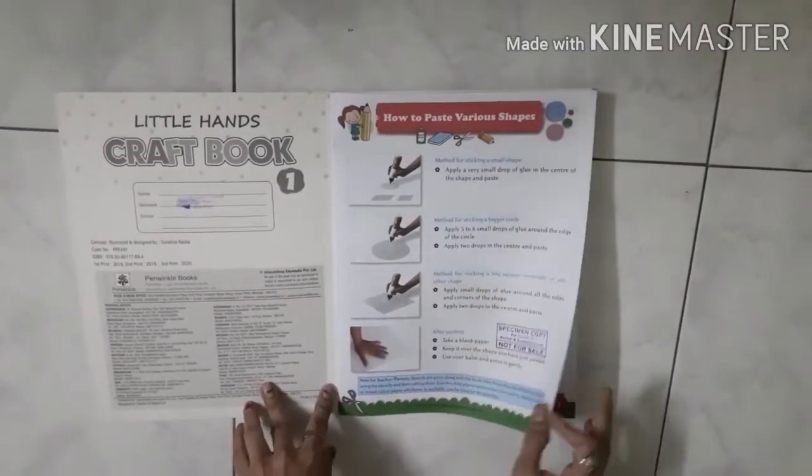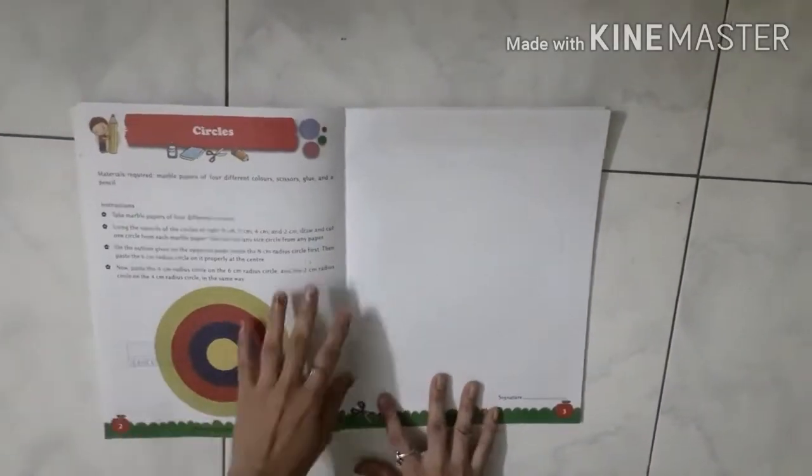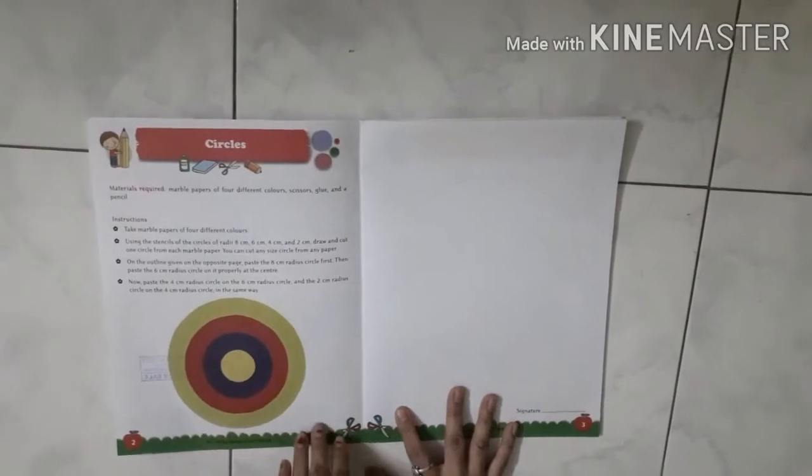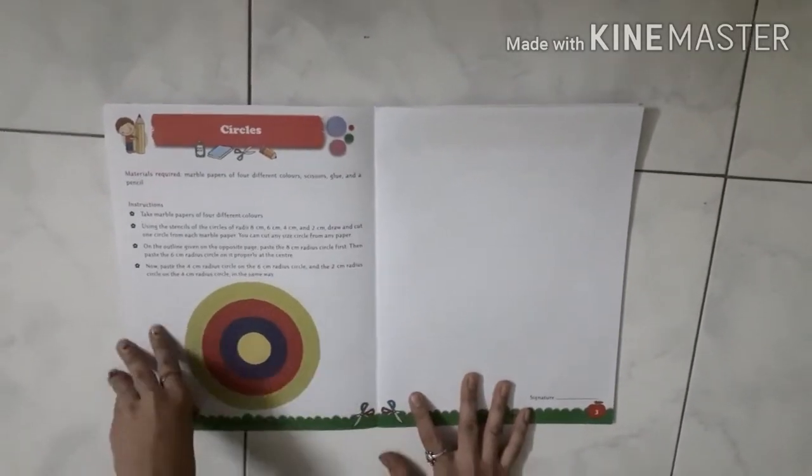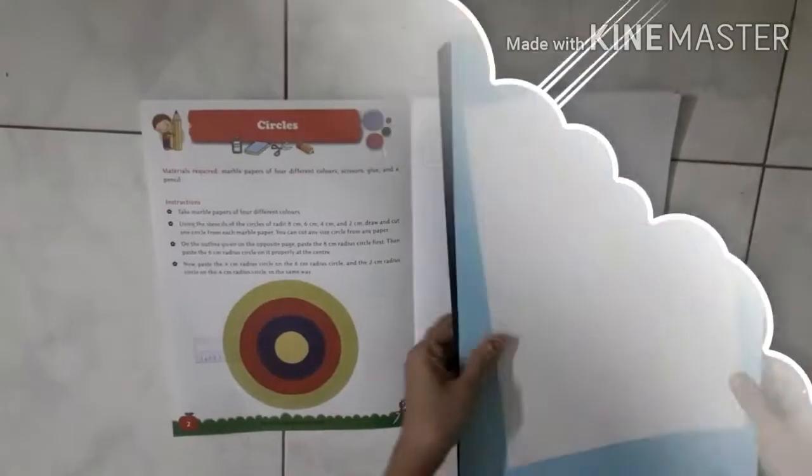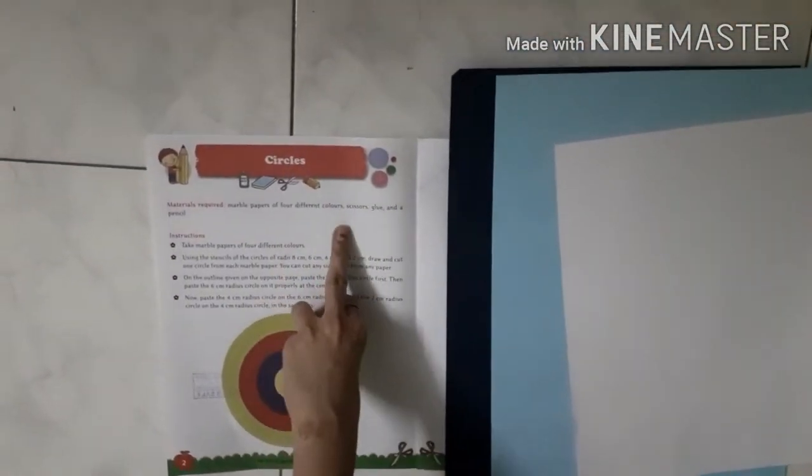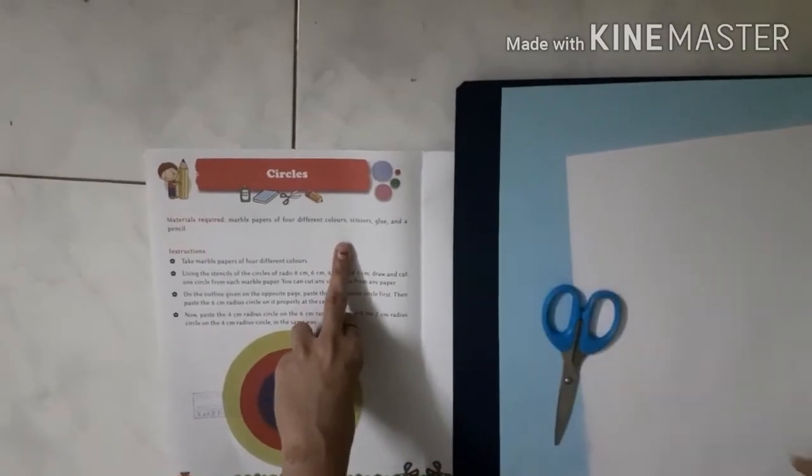Now follow my steps. We start from page number two: Circles. Materials required are marble papers or any papers, scissors, glue, and a pencil.